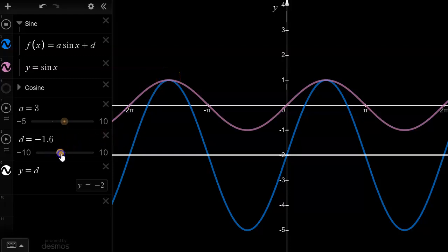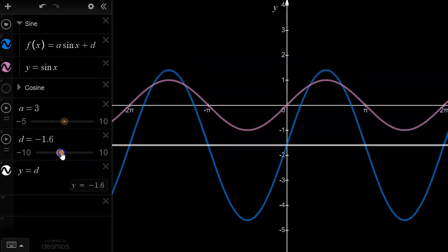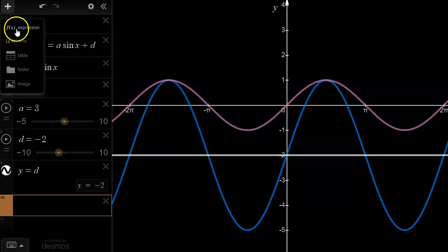And whereas before, when I was at 0, my minimum point was at negative 3, when I vertically displaced two units down, now negative 3 minus 2 is at negative 5. And so now my range is from negative 5 to positive 1. And in general, we can say that the maximum is equal to d plus a, while the minimum is equal to d minus a.